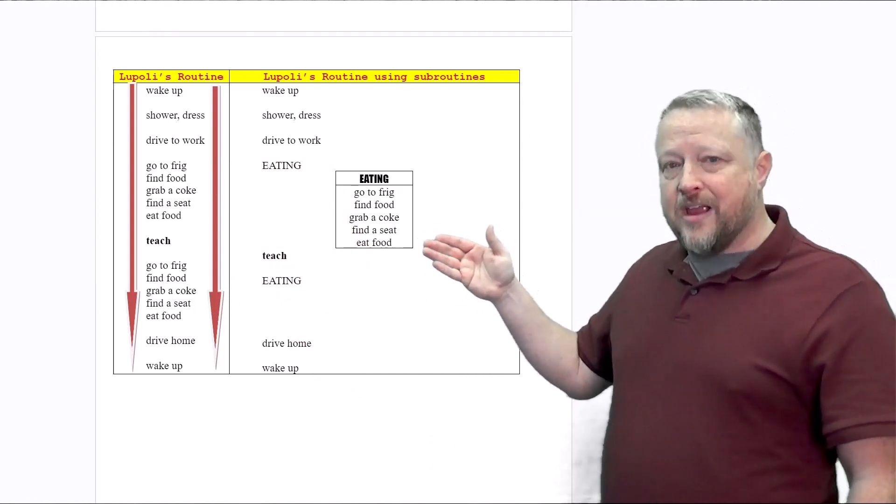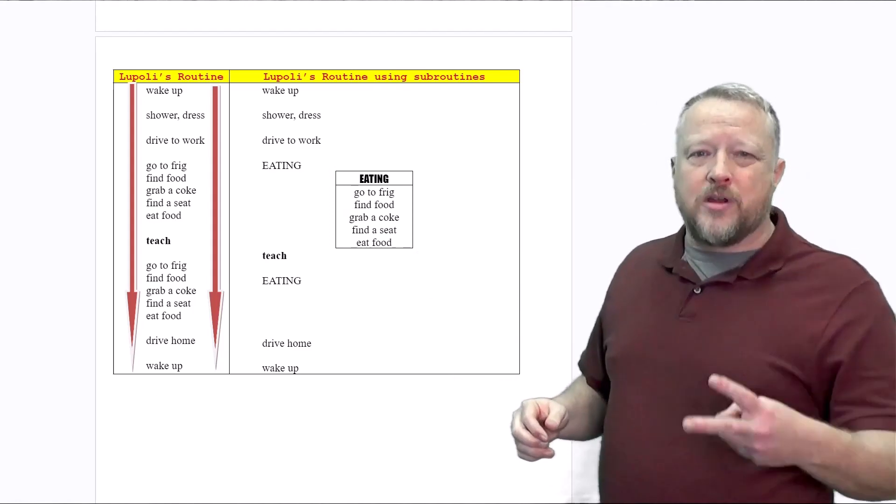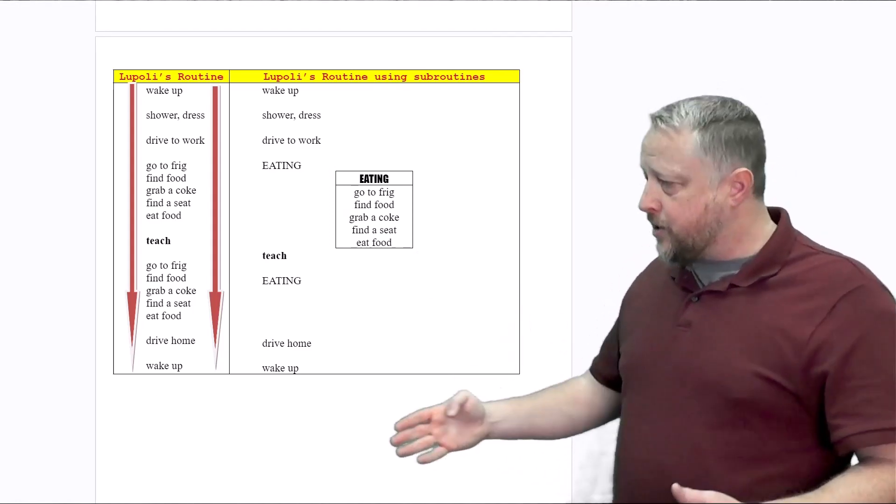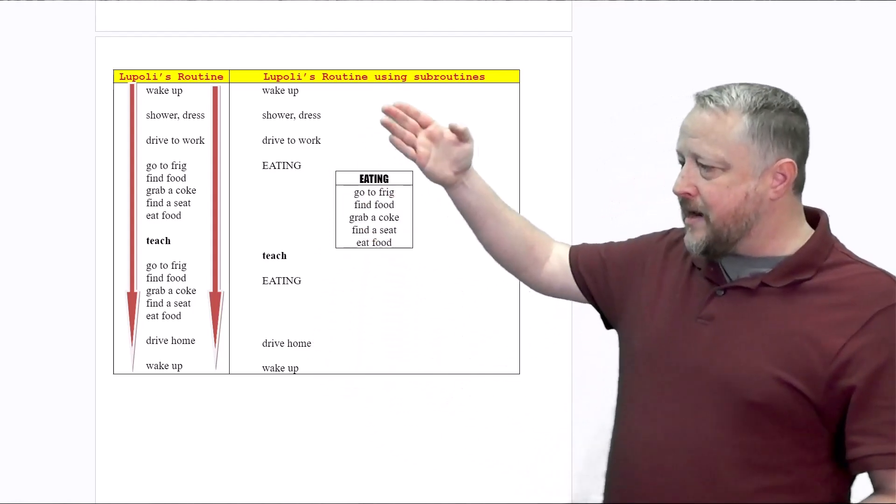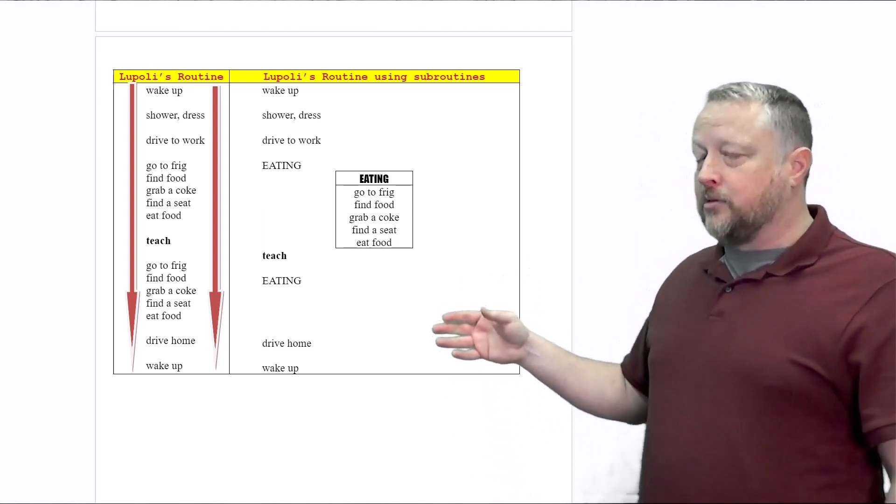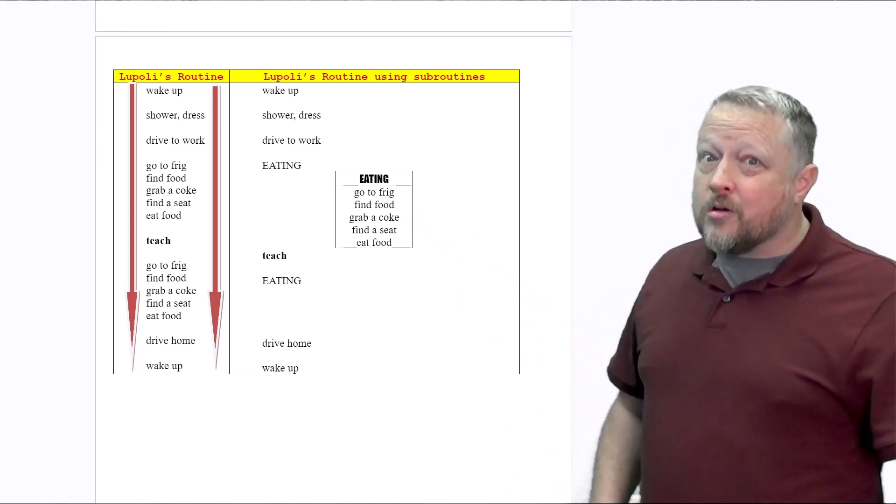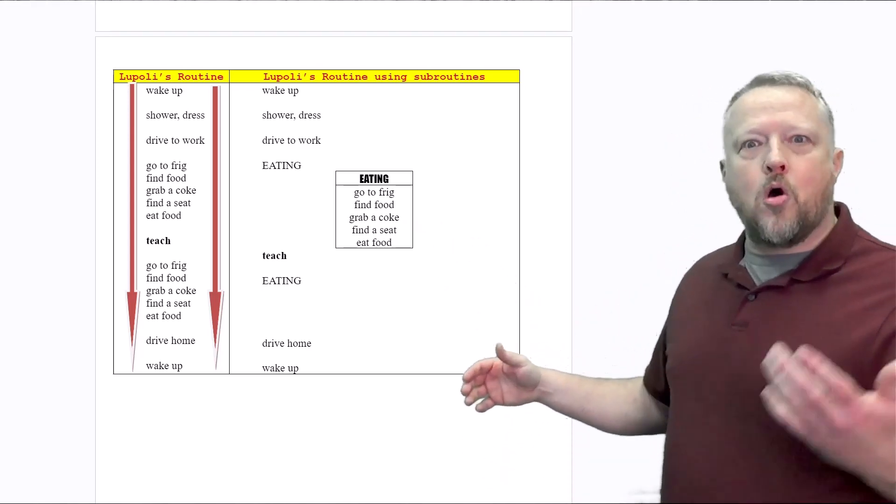Why would we want to do that? Frankly, two reasons. Number one: organization. Notice if I did that, my main gets a lot smaller. Number two: let's pretend I'm on a diet. Instead of a coke, maybe I should grab a diet coke, probably better for me, or water.